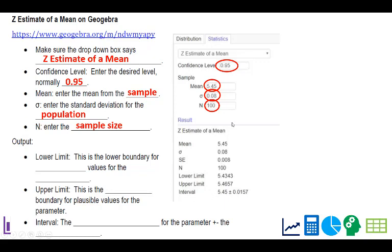And then once you do this, it gives you a result immediately. Your lower limit, this is a lower boundary for plausible values for your parameter. The upper limit is the upper boundary. The interval here is that estimate of what your parameter is plus or minus your margin of error.